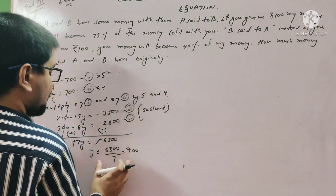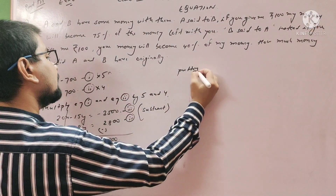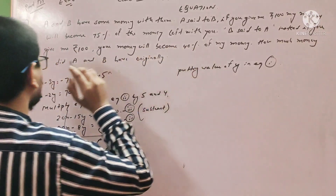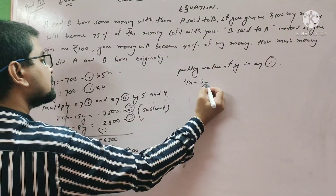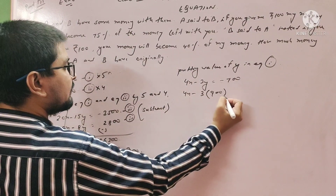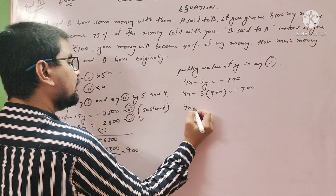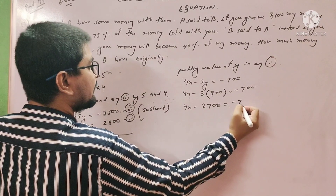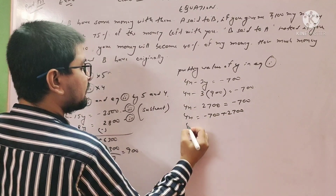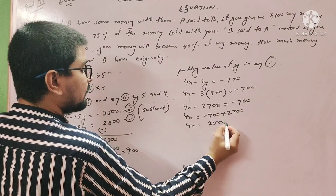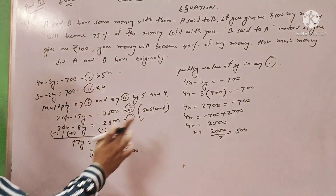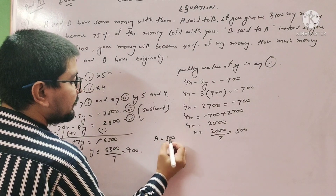Putting the value of Y equals 900 into equation 1: 4X minus 3×900 equals minus 700. So 4X minus 2700 equals minus 700, giving 4X equals 2000. Therefore X equals 2000 divided by 4, which is 500. A has 500 rupees.